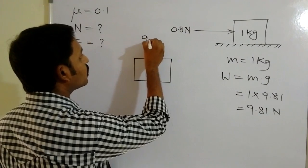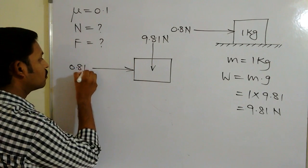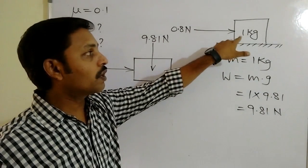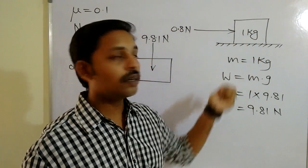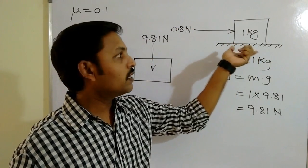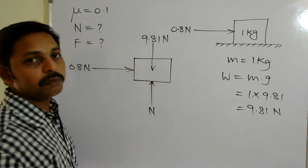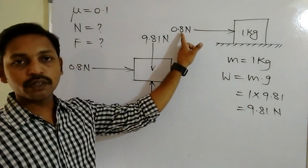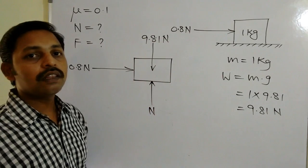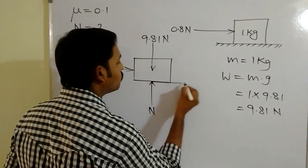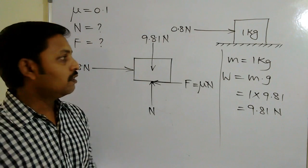The weight of 9.81 newtons acts vertically downwards, and there is a horizontal force of 0.8 newtons. The block is not able to move downward because there is a restriction, so there will be a reaction in the opposite direction perpendicular to the surface — that is the normal reaction. By the application of 0.8 newtons, the block may have impending motion, so in the opposite direction we represent the frictional force, which equals μN.